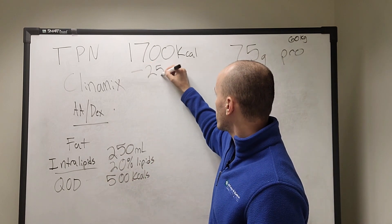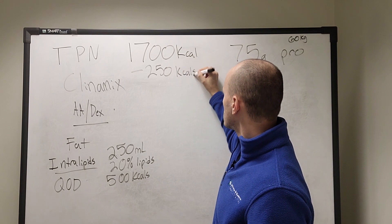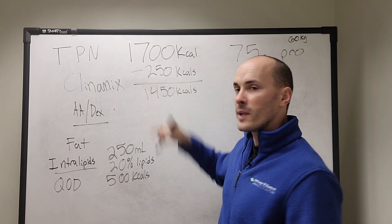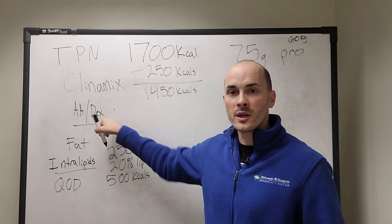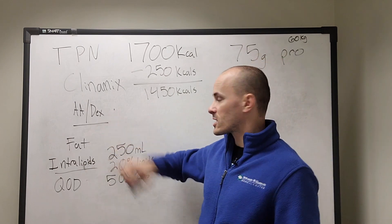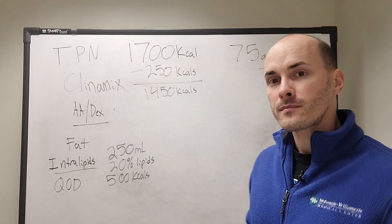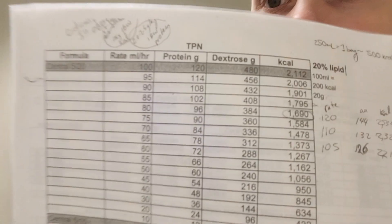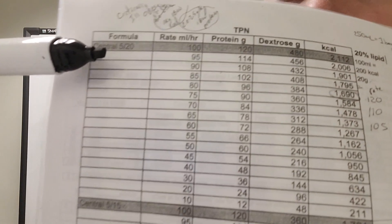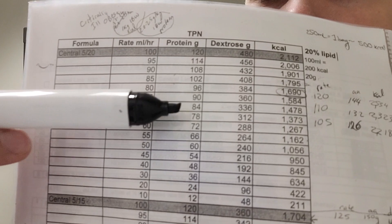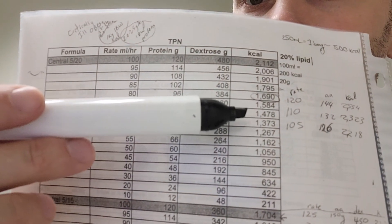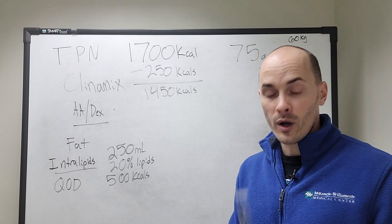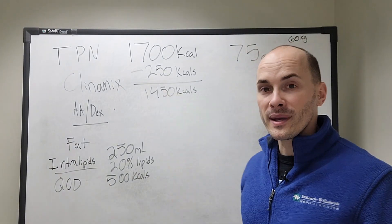We can subtract the fat calories from their total caloric need to get 1,450 — these are the remaining calories we need from the amino acid dextrose containing fluid. Now that we know they need 75 grams of protein and 1,450 calories, we go to our cheat sheet and look at the 520 solution. At 70 mL/hr, that gives 84 grams of protein and 1,478 kcals, so this 520 solution at 70 an hour will meet their needs.